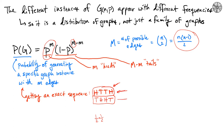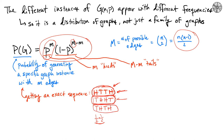Notice that this exact sequence and any other exact sequence with the same number of heads and tails happen with the same probability. However, the number of ways to get two heads and two tails depends on the size of the set of possible sequences. Let's take a look at how many different ways you can get a given number of heads and tails.